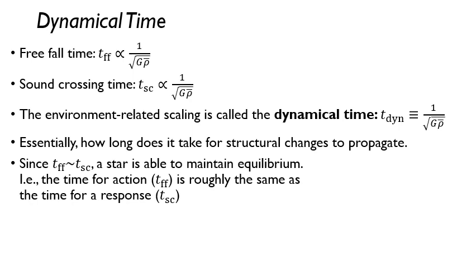For a star, you see that the freefall time is on the order of the sound crossing time. That is why our star is able to maintain equilibrium. The time for some kind of action to happen, like a collapse, is roughly the same as the time for the response - this pressure wave time, this sound crossing time. That's basically how our star is balanced - if there's a little bit of a collapse inward, the pressure wave responds quick enough, on the order of the same time as the collapse, to counteract it. That's how it can maintain some sort of balance.